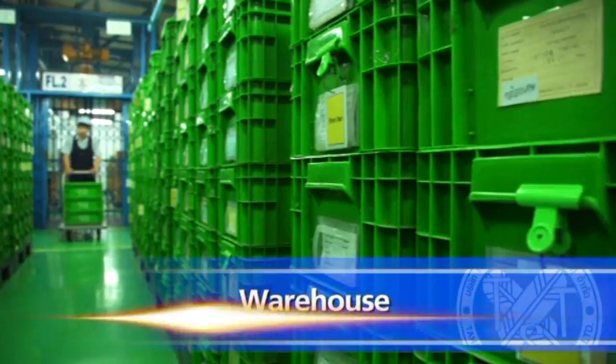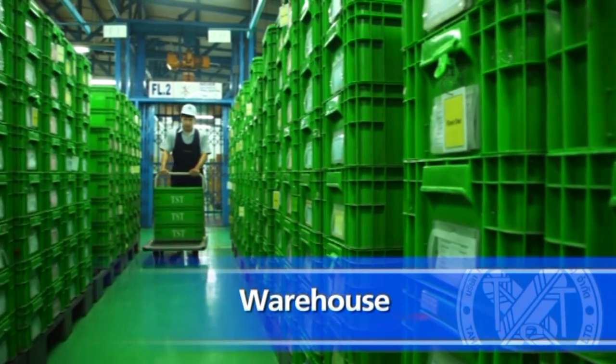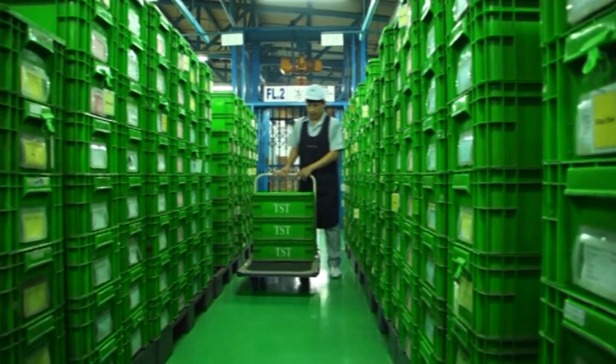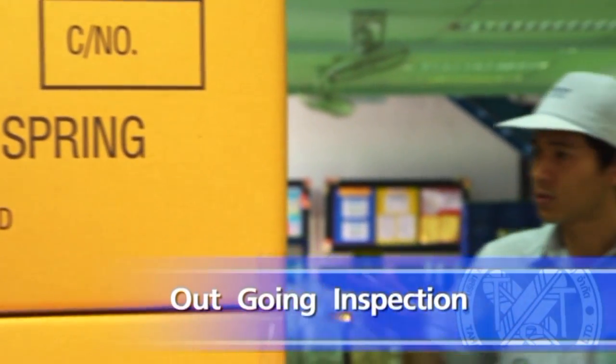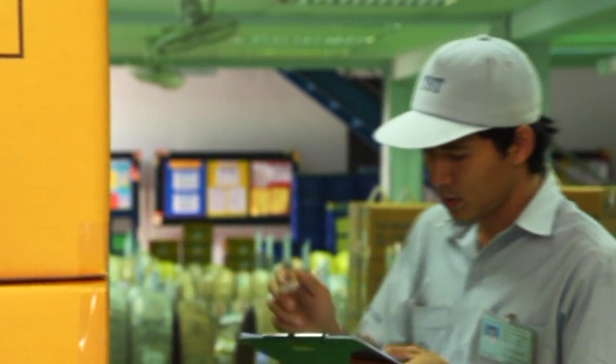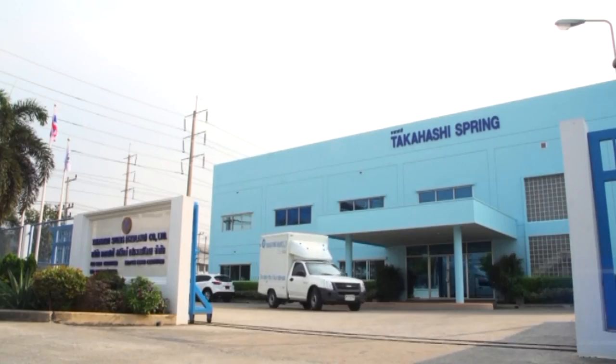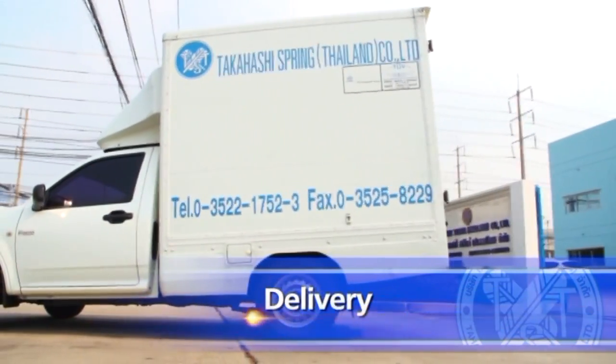Warehouse: storing the finished products for delivery. Outgoing inspection: thorough inspection before delivery. Delivery: punctual delivery system.